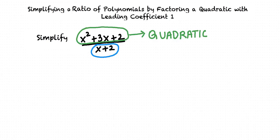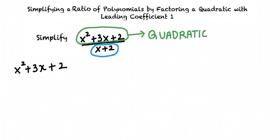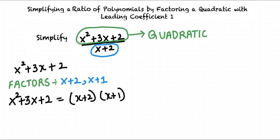Should we always factorize the numerator? Whether we factorize the numerator or the denominator depends on the type of problem. The rule of thumb would be to identify the quadratic expression and express the quadratic expression as a product of its factors. Consider the quadratic expression x² plus 3x plus 2. The factors of this expression are x plus 2 and x plus 1. We can rewrite this quadratic expression as a product of its factors.